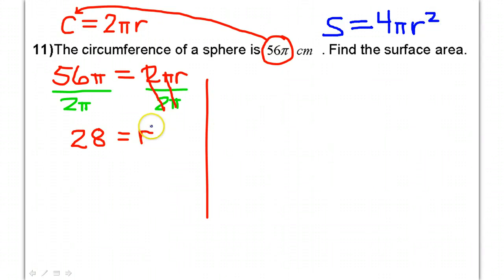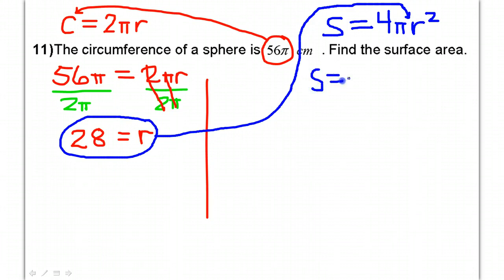Okay, so using the radius of 28 and substituting that in, that's going to give me that the surface area is 4π times 28 squared.